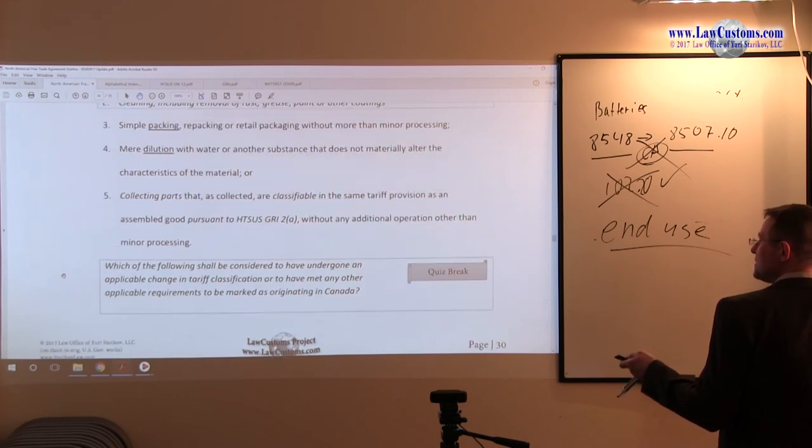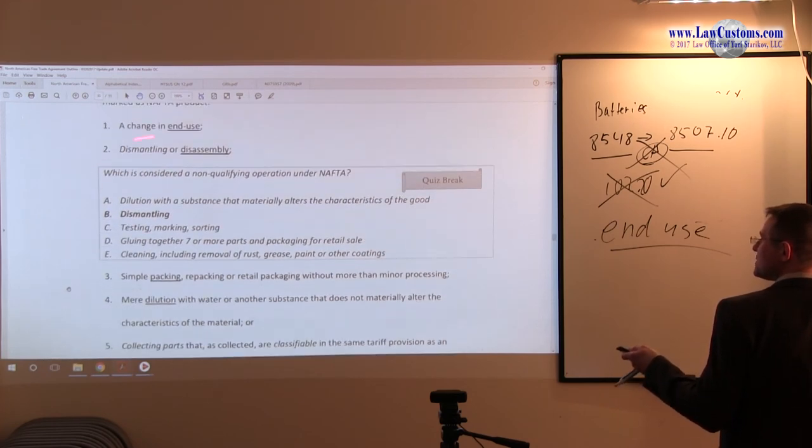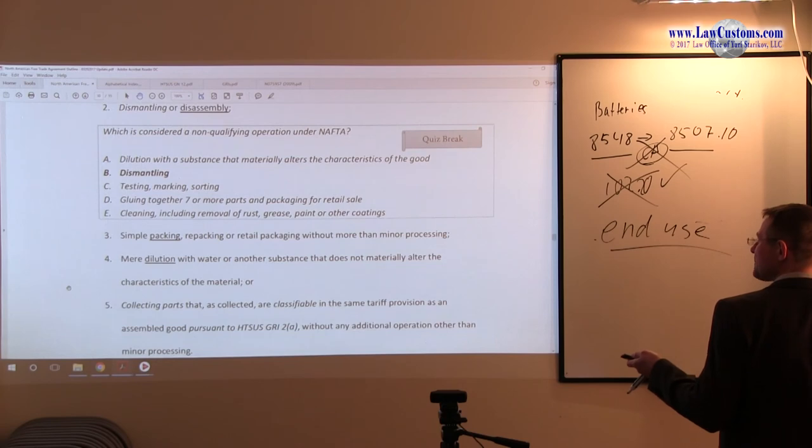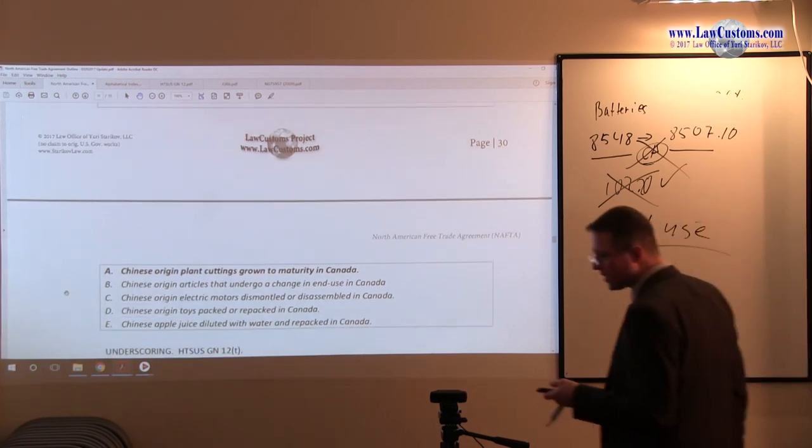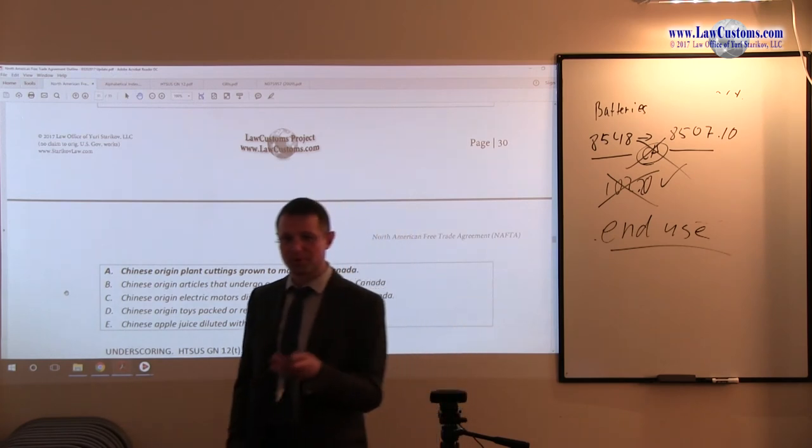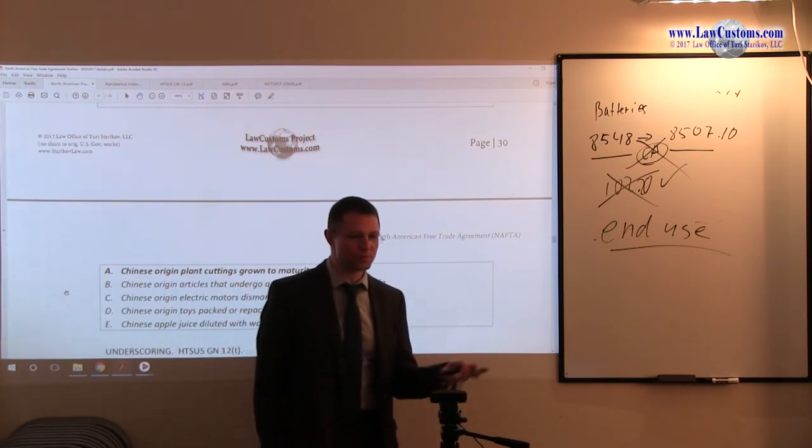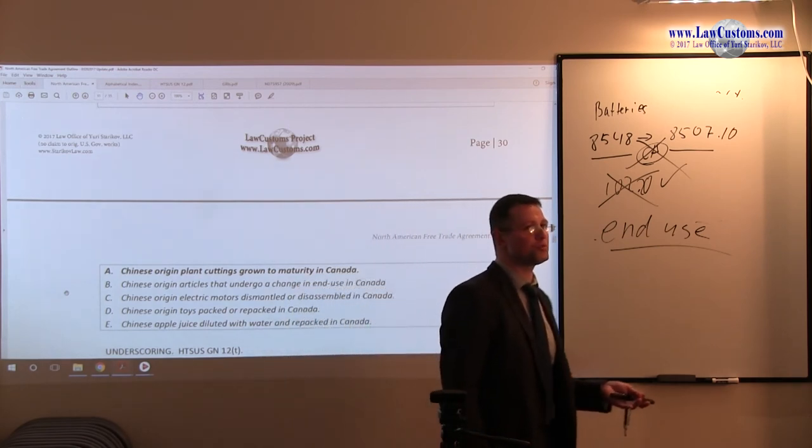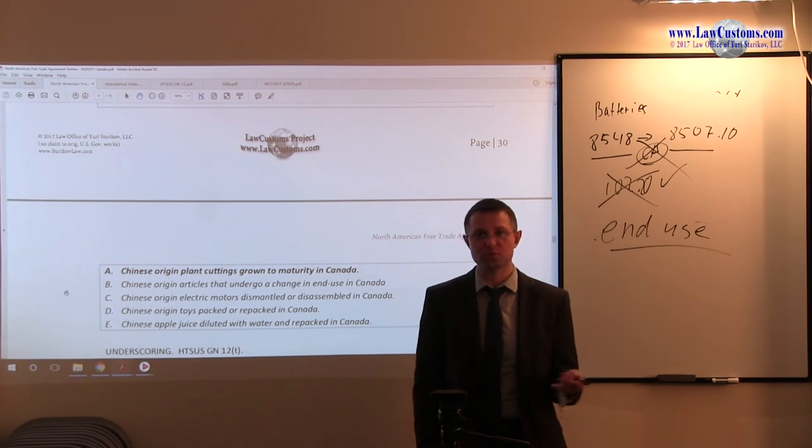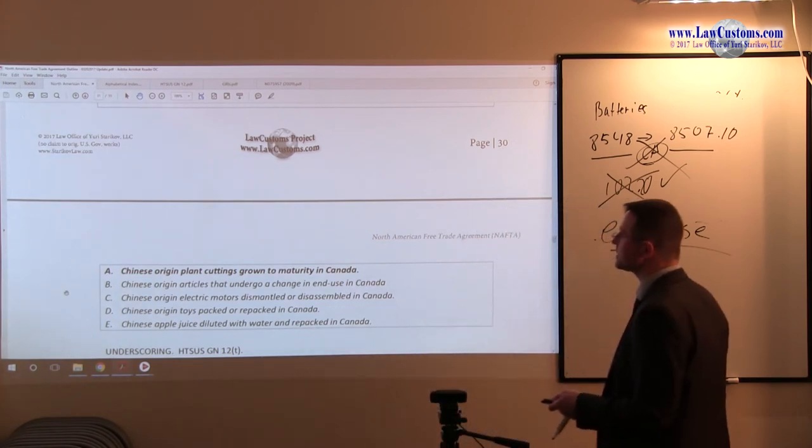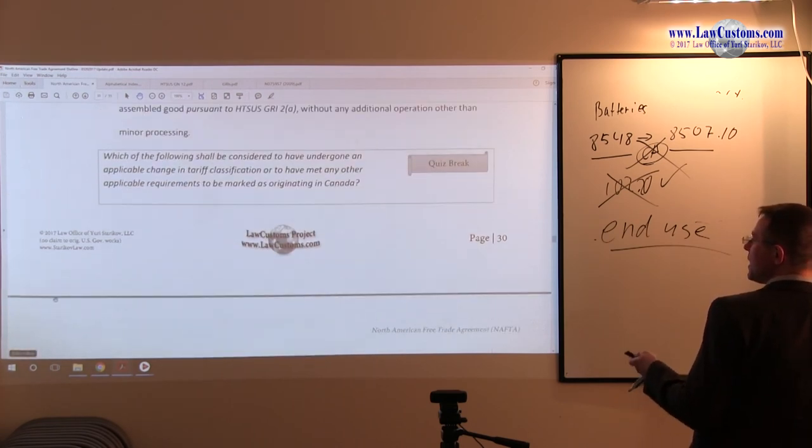Is it applicable under the following, right? So there is no parts, there is no dilution, there is no simple packing, there is no dismantling or disassembly, right? It's a plant, right? How can you dismantle or disassemble the plant? A change in end use? Well, it's difficult to argue that big of a change. Plant is a plant, right? So unlike the battery example, the change in end use was to provide electricity and then to be used for recycling. This change in the plant end use is to really provide a plant product, whether for agricultural purposes or for aesthetic purposes. So A is something which is a correct answer choice because they have met this requirement.